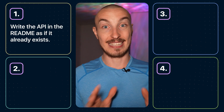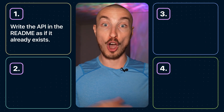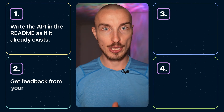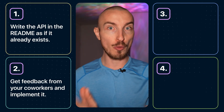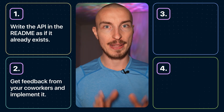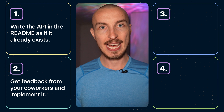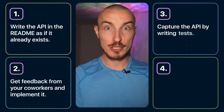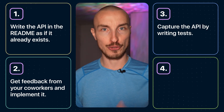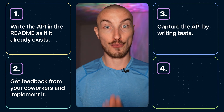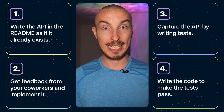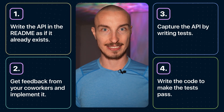Here is how it works. Write the README as if the code already exists. Share that README with your co-workers and implement their feedback. Then write the tests that capture the API of your README. And finally write the code that makes your tests pass.